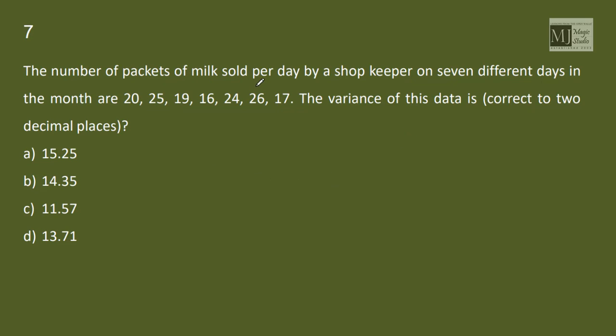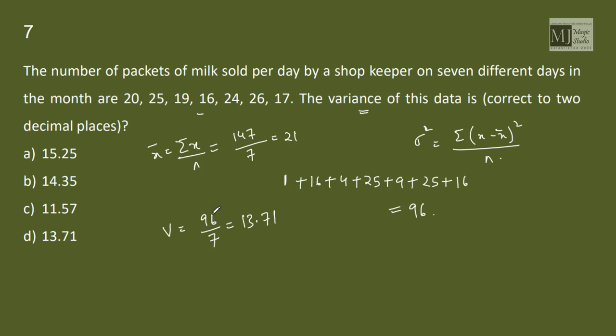The number of packets of milk sold per day on 7 different days are this. Find the variance. You know the formula for variance: variance is summation of x minus x bar whole square by n. We need x bar. X bar is total of all the numbers divided by n, so total is 147 and n is 7 which gives me 21. So mean is 21. Now 20 minus 21 is 1, 1 square is 1, 25 minus 21 is 4, 4 square is 16, so our variance would be 96 by 7 that is 13.71. 13 into 7 is 91 so 13.7 fits in option D.